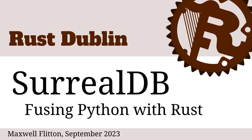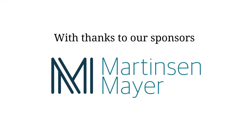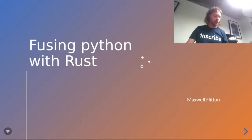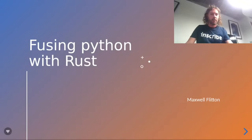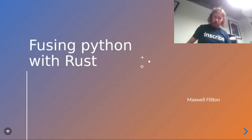I'd like to introduce Maxwell Fenton, who's come over from the UK to give a talk on SurrealDB. He's working with that company on AI projects. This project is about how they used Rust bindings to connect to a Python application. I'd like to thank Markson Mayer for giving us the office here today. And without further ado, I will introduce Maxwell.